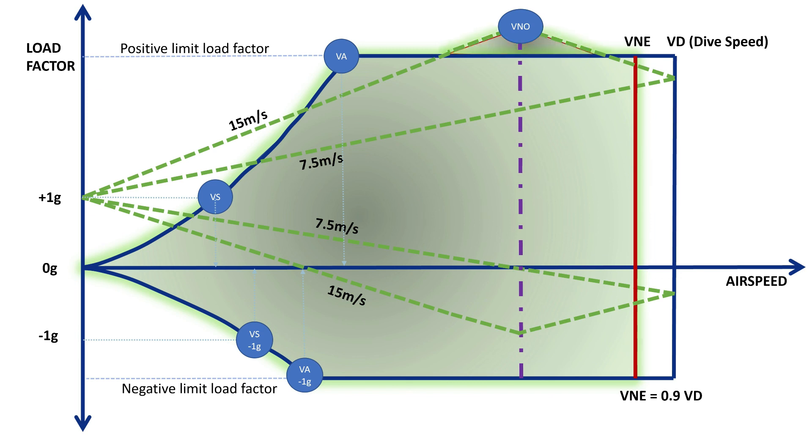We now have a complete flight envelope incorporating both the maneuvering and gust envelopes. Remember the amber caution area as depicted on the airspeed indicator may only be flown in smooth air.